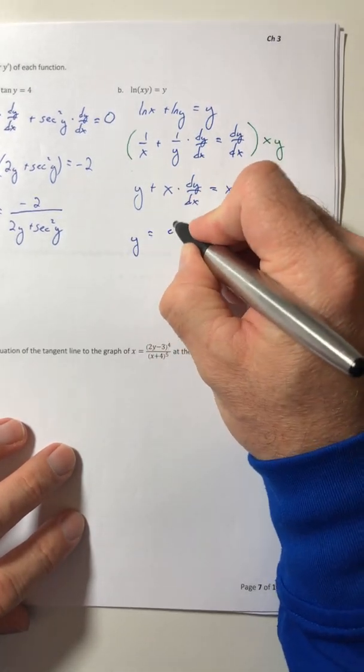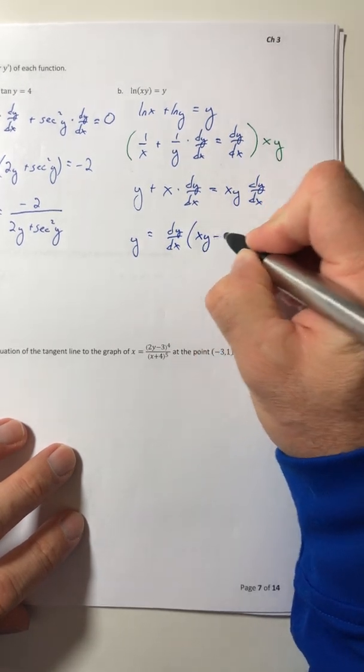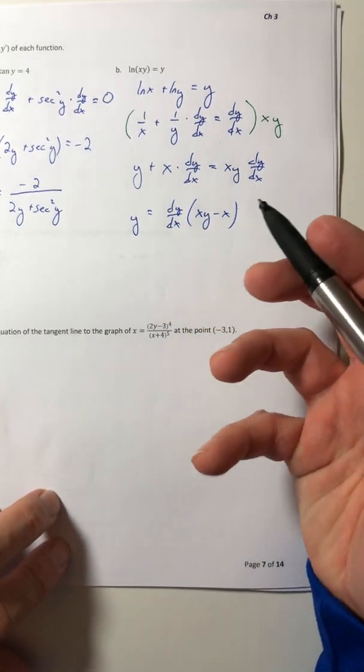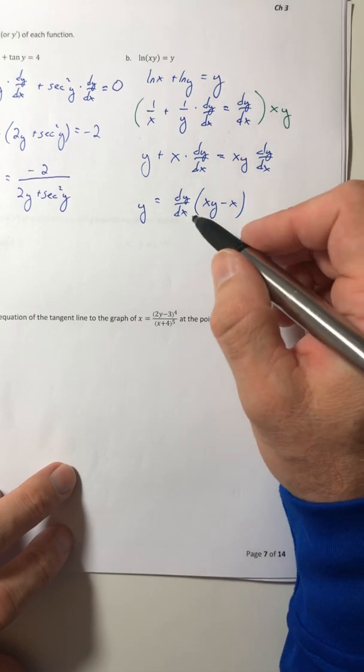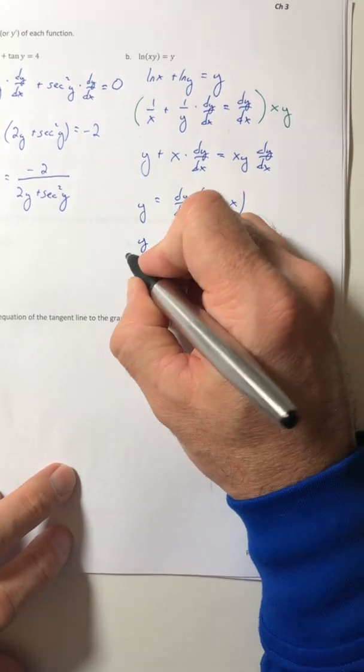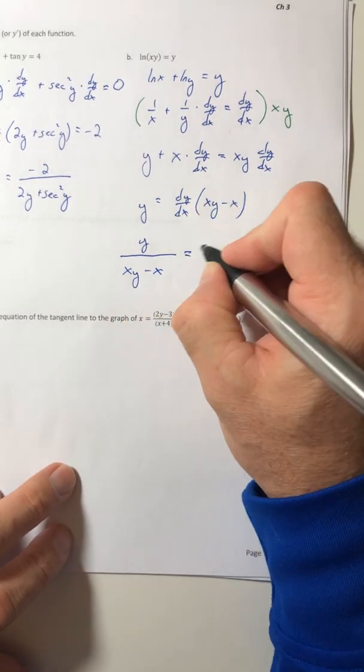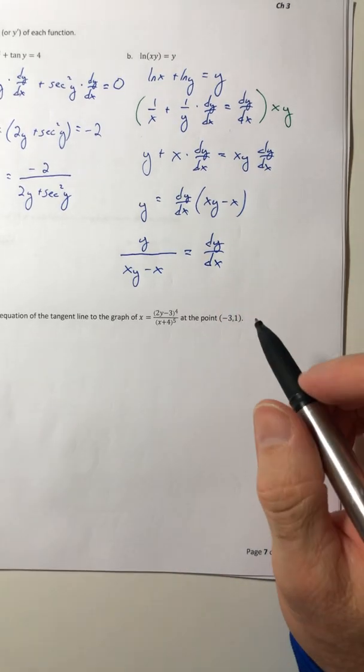So let's move this term all the way over to the right. And while we do that, we might as well factor out the dy/dx. You can pull the x out if you want to. You don't need to, because you're not solving for x, just the dy/dx. So now just divide. And there's your dy/dx.